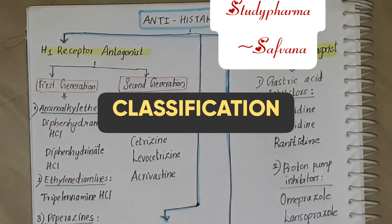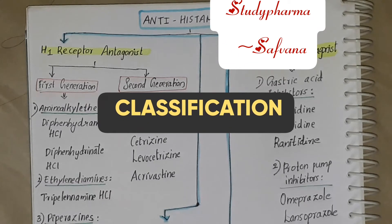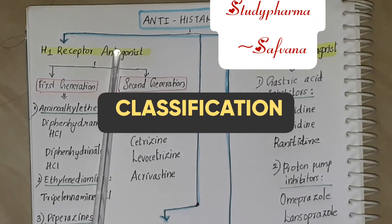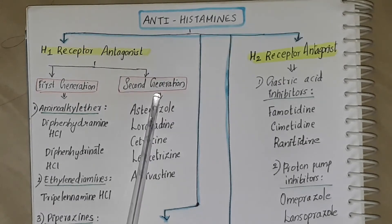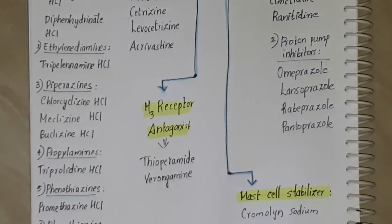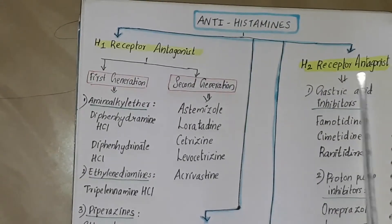Antihistamines are used to reduce or block the action of histamine, which is known to cause allergic symptoms. They are classified as H1 receptor antagonists, H3 receptor antagonists, mast cell stabilizers, and H2 receptor antagonists.